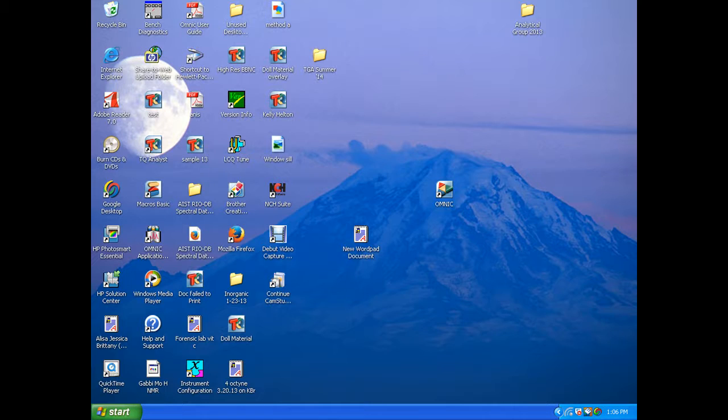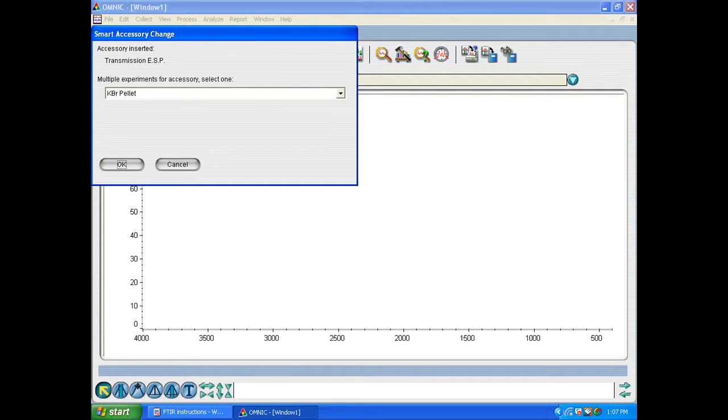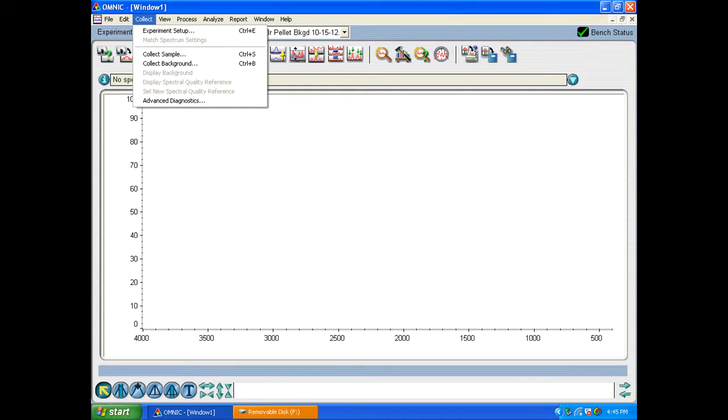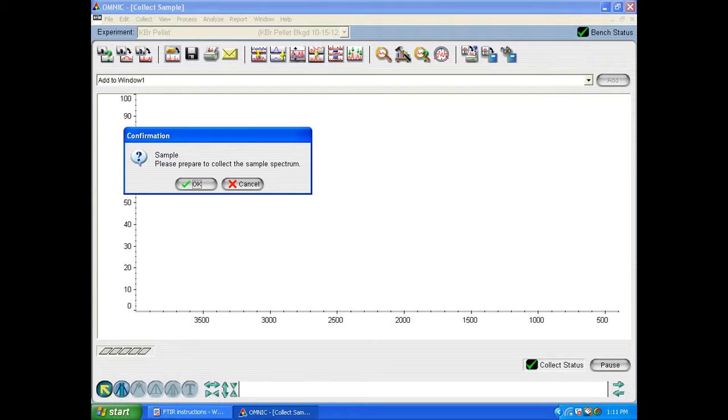So now that we have our KBR pellet made and we've placed it into the IR, now we can go ahead and run the experiment. So to do that we want to open up OMNIC. You'll see a window that says smart accessory change pop up and you just got to hit OK. So now we are ready to collect our data. To do that we go up to the top to the collect tab and then click the collect sample option there.